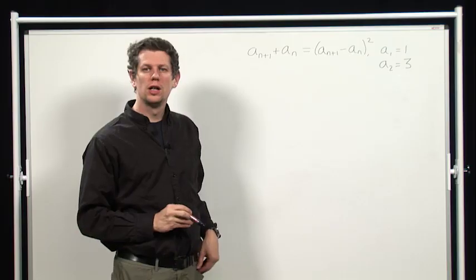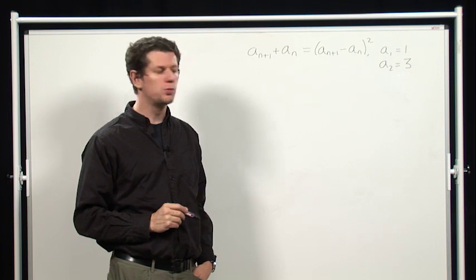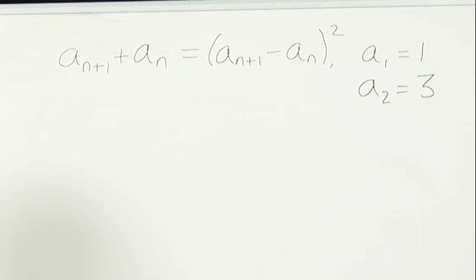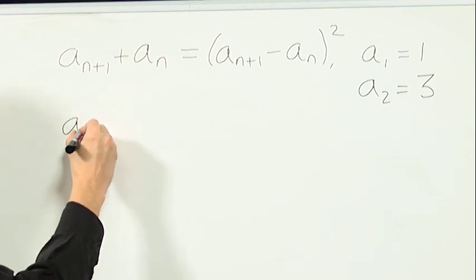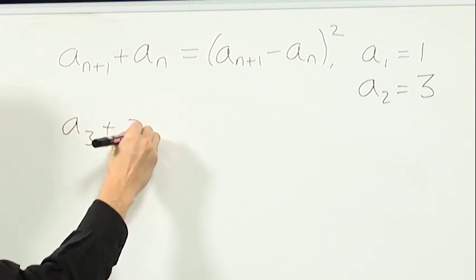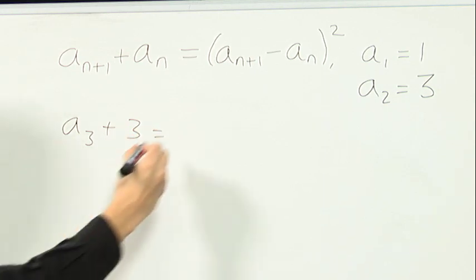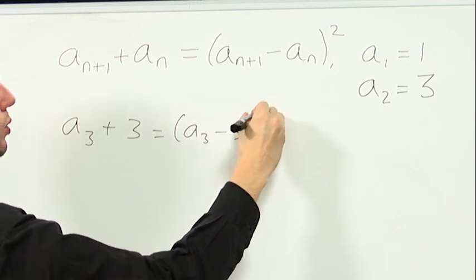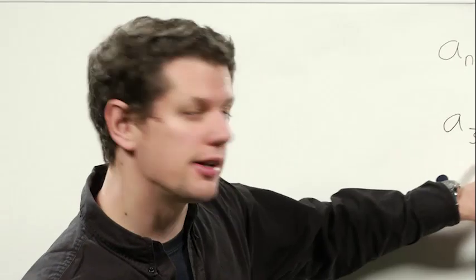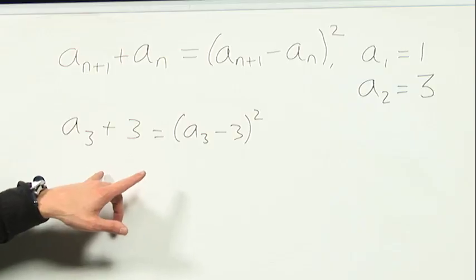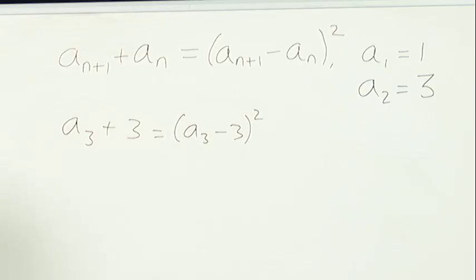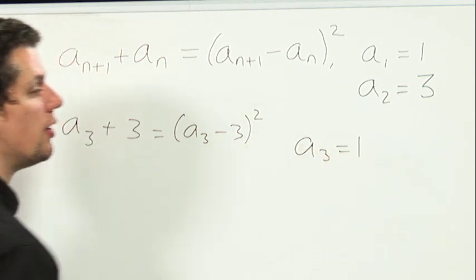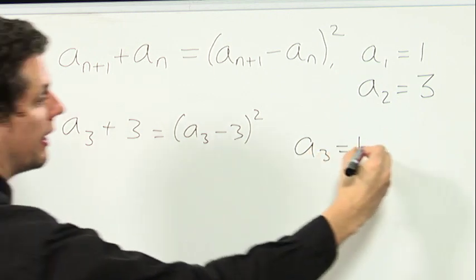Now we've successfully worked out a2, let's try to work out a3. We'll do that similarly by substituting n equals 2 into here. So we get a3 plus 3 equals a3 minus 3 all squared. And again, that's a quadratic in a3, or it would be if we multiplied it out, and we can quickly check that it's got solutions a3 equals 1 or a3 equals 6.